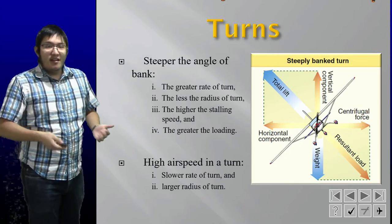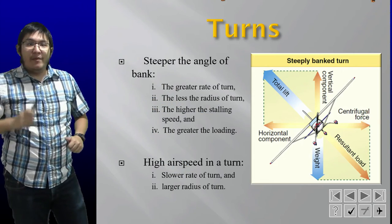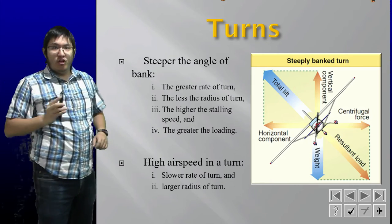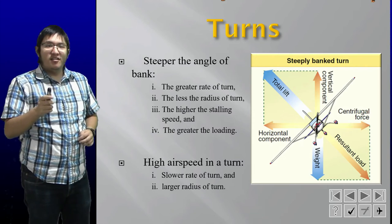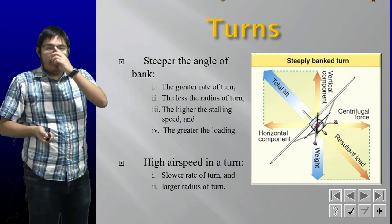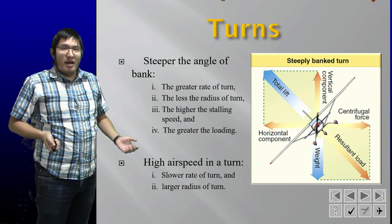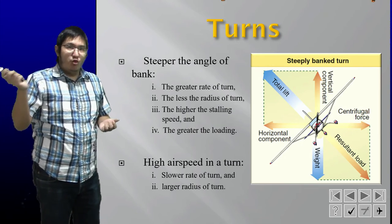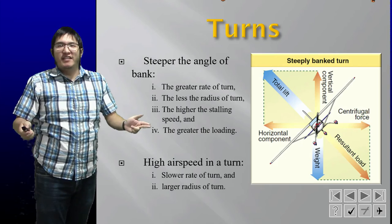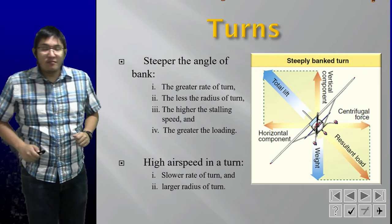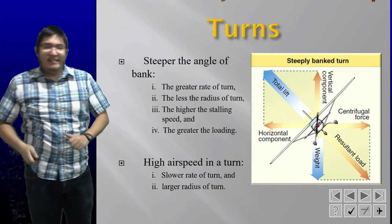In a turn, there are two key scenarios. A steeper angle of bank — say 45 degrees instead of 15 — gives you a greater rate of turn and a smaller radius of turn, but also a higher stalling speed. In a glider with a stall speed of 38 mph, a steep bank could raise that to 45 mph, causing you to stall sooner. A steeper bank also places greater load on the wings, exposing them to much more force.